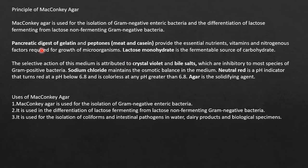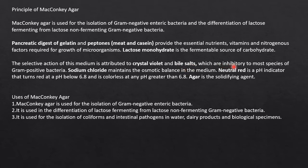The pancreatic digest of gelatin and peptones from meat and casein provide essential nutrients, vitamins, and nitrogenous factors required for the growth of microorganisms. Lactose monohydrate is a source of fermentable carbohydrate. The selective action of this medium is attributed to crystal violet and bile salts.